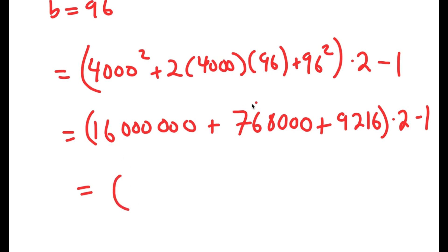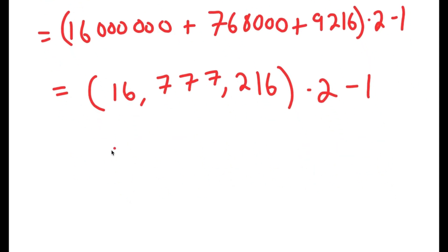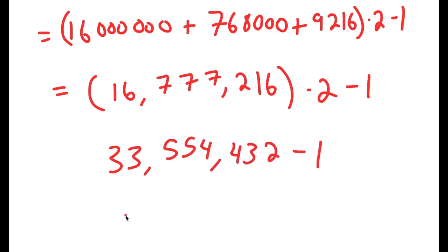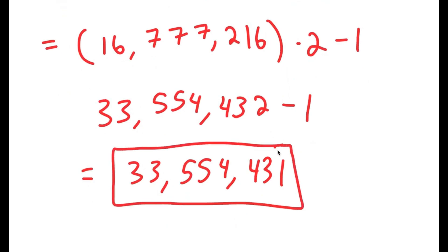If I add all of these up in the parentheses, I get 16,777,216. Now I have this times 2 minus 1. Multiplying by 2 gives 33,554,432, and subtracting 1 gives 33,554,431. So this is my answer to this problem.